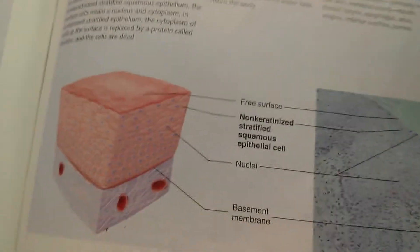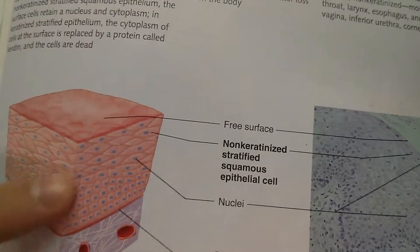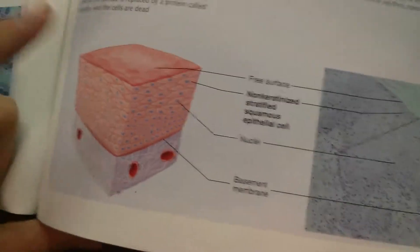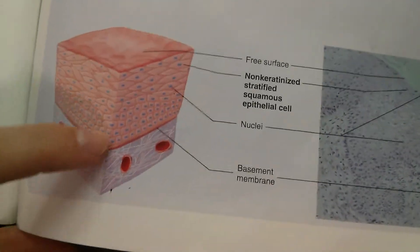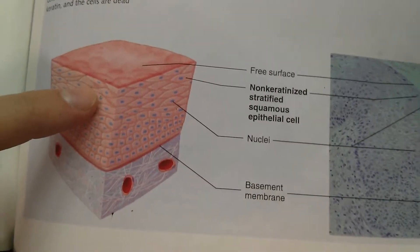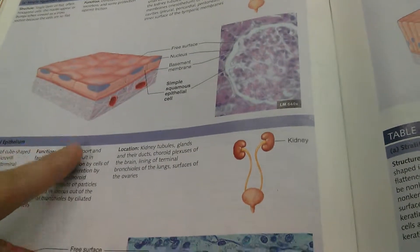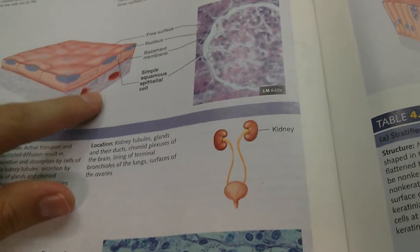Now, back to stratified epithelium. You'll find these in places that need a lot of protection. There are multiple layers to act as a really good barrier and protective surface, whereas simple squamous would not act as a good protective lining because it's very, very thin and wouldn't offer any protection at all.